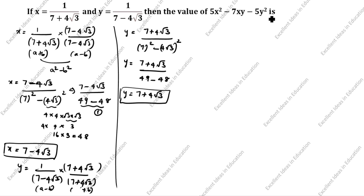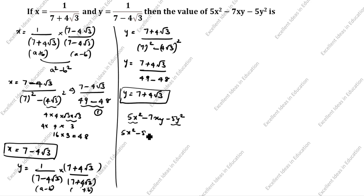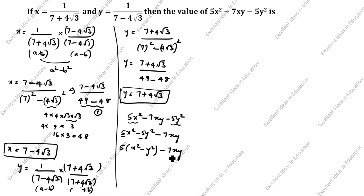Now we will find the value of 5x square minus 7xy minus 5y square. First we group 5x square and 5y square together: 5x square minus 5y square minus 7xy. Taking 5 as common outside gives 5 times (x square minus y square) minus 7xy.